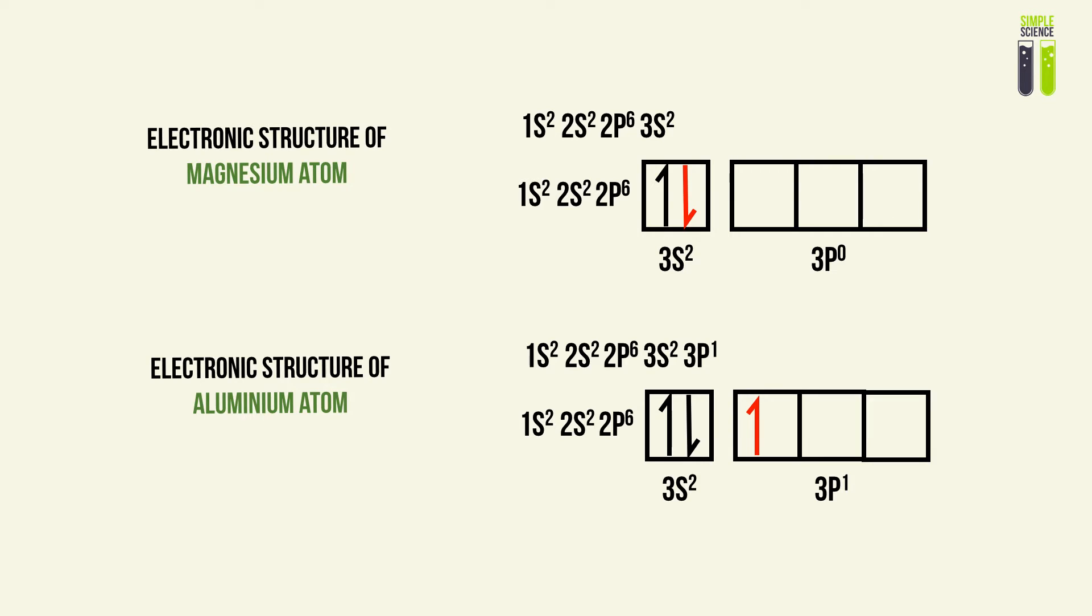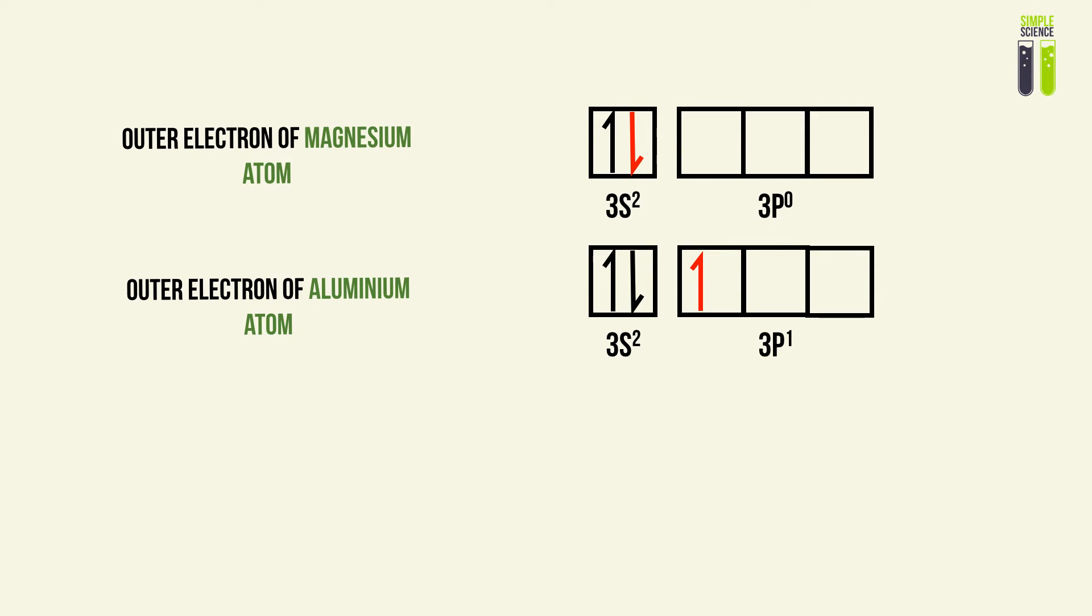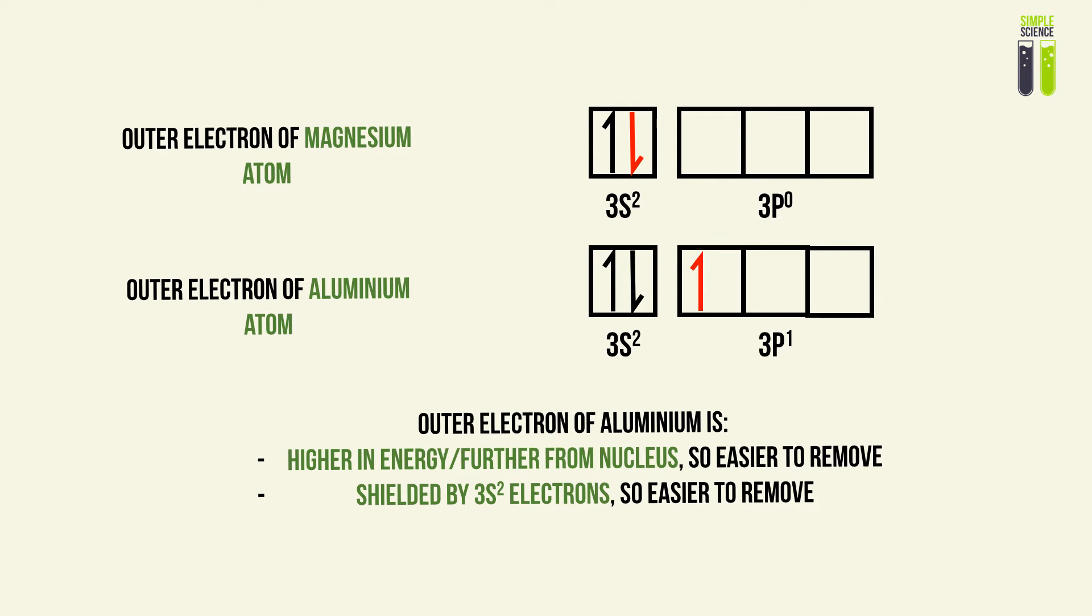Let's look at them closer. As you can see, the outermost electron of aluminum lies in the p subshell, which is in a higher energy state than the outermost electron of the magnesium atom. Therefore, it is further from the nucleus, so this causes it to be easier to remove.